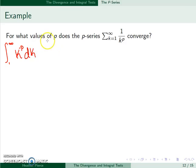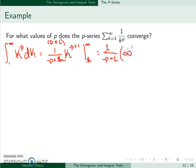And we're going to assume for now that p is not equal to 1 because that will have a special case. So in general, we would add 1 to the exponent and then divide by that number. So 1 over negative p plus 1, and then we have infinity to the negative p plus 1 minus 1 over negative p plus 1 times 1 to the negative p plus 1.